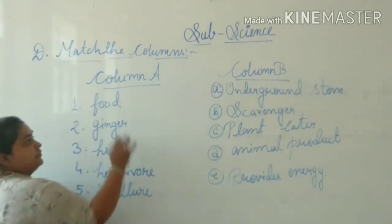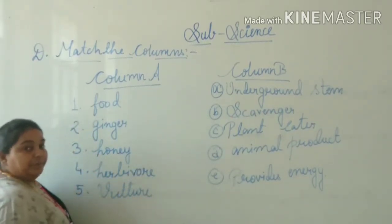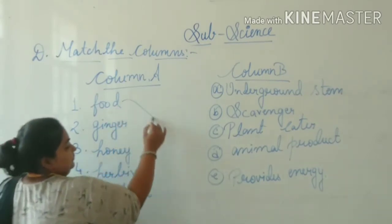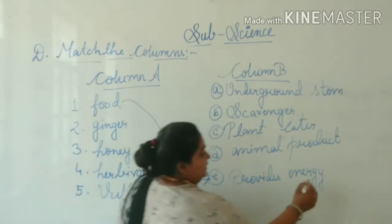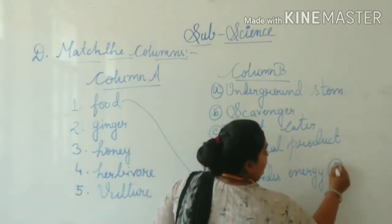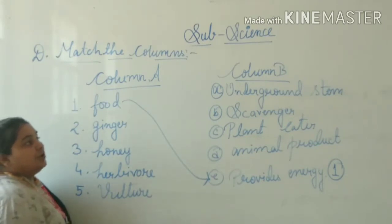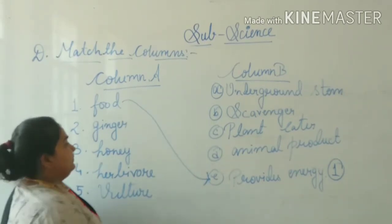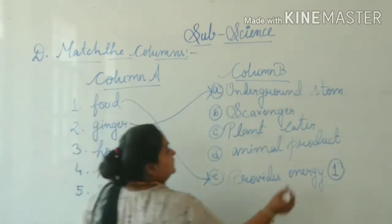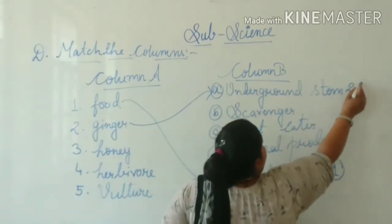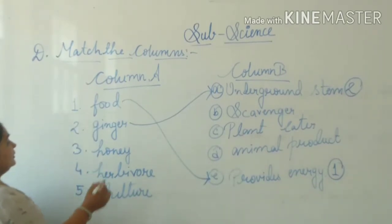What does food give us? Out of these five options, can you guess the answer? Yes — that is 'provides energy.' It's the right answer, and this is answer number one. Number two is ginger. What is ginger? It's actually an underground stem, so the answer is 'underground stem.'